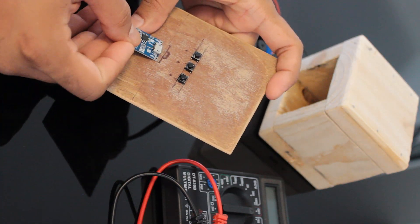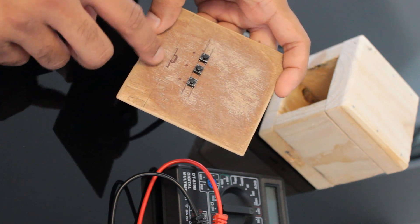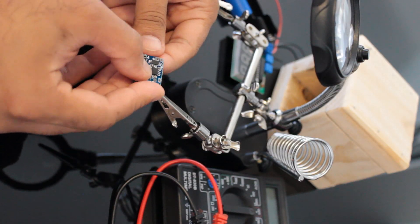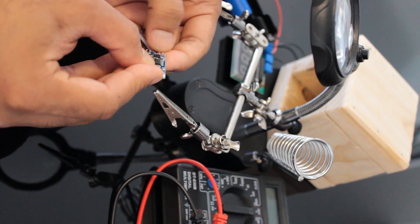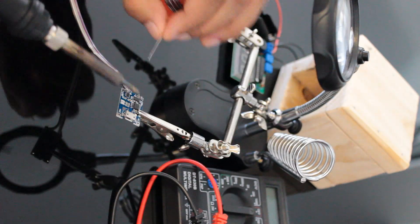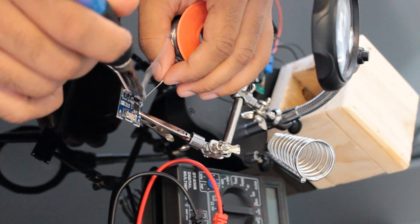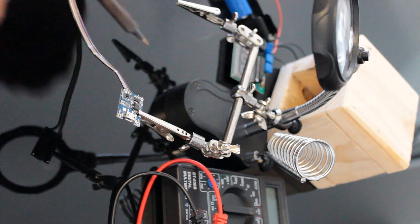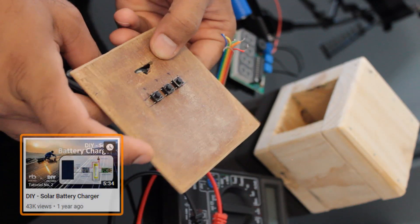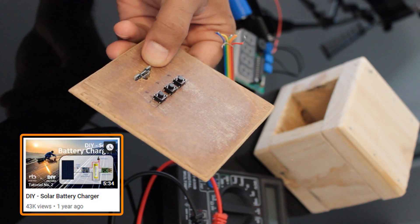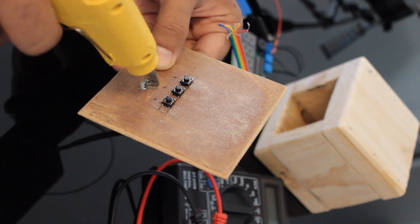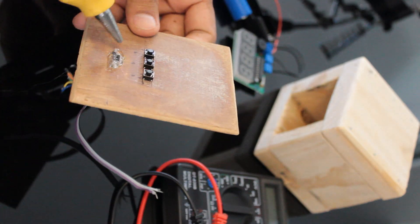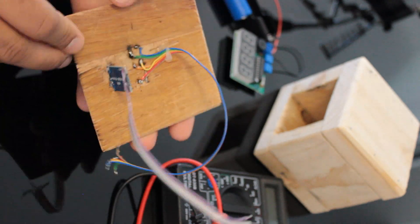Next, I'm going to install the TP4056 battery charging module with the protection IC to the unit. The protection IC protects the 18650 battery from overcharging and over-discharging. If you want to know more about the module, please check out my tutorial number 2, DIY solar battery charger. After drilling the right size hole in the back plate, I'm going to hot glue the module into it.